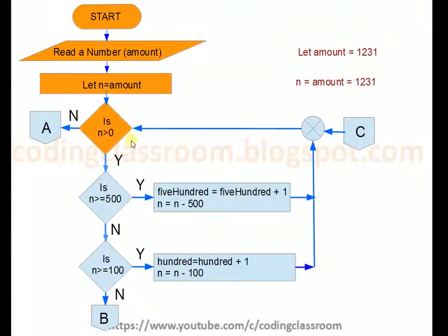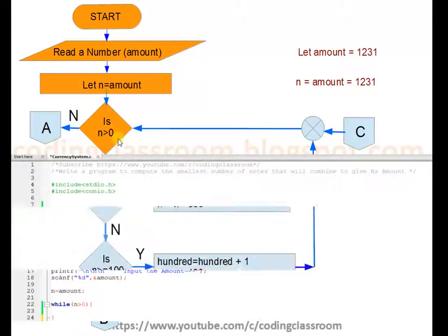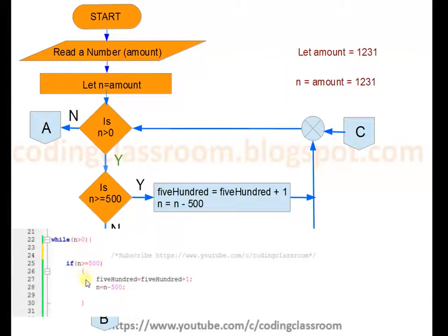Now, is n greater than 0? Here we are using a while loop. The while loop will continue to perform operations till n is greater than 0. Inside the loop, we check: if n is greater than or equal to 500, then we perform the operations — 500 equals 500 plus 1, and n equals n minus 500 — as we discussed earlier.